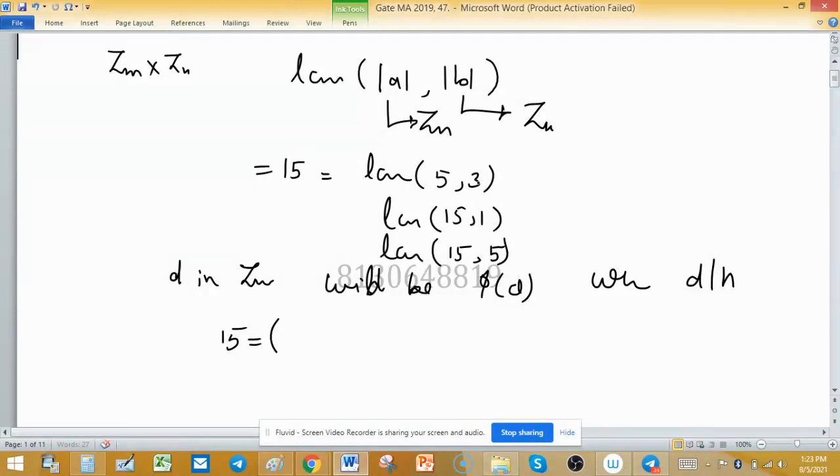First case: whenever LCM is 15 from (5,3), the number of elements of order 5 will be φ(5), and the number of elements of order 3 will be φ(3). Since these are prime, φ(5) = 4 and φ(3) = 2. So this will be 4 × 2 = 8. So the number of elements in this case is 8.